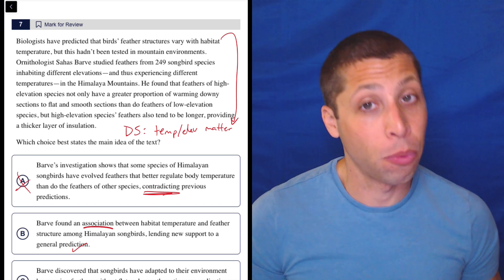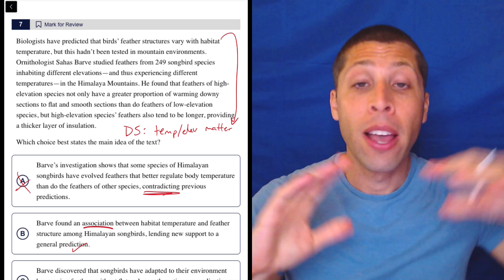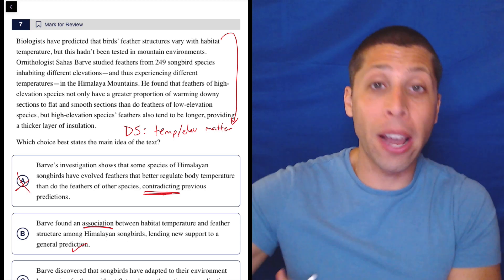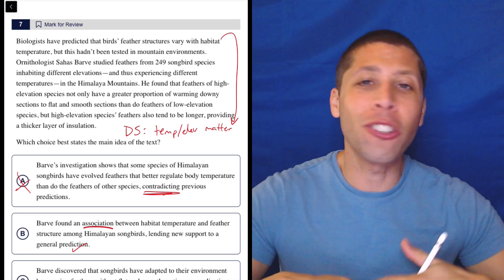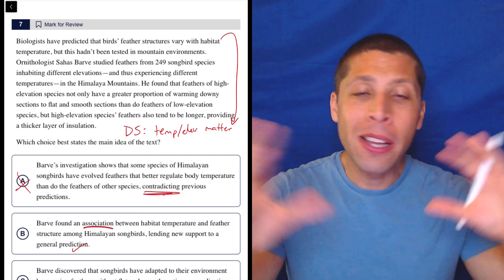They could have a negative association, whereas one thing goes up, the other thing goes down. Those ideas will matter. There are other passages that that's really important. But by itself, association just means there's some relationship.